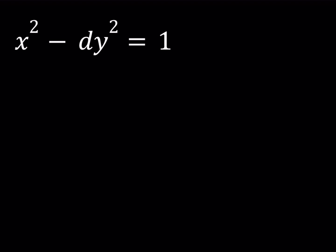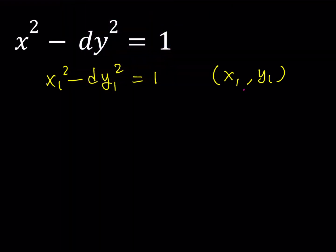I'd like to define the fundamental solution to this equation. Obviously, this equation has a solution. Let's say the solution is x₁, y₁ such that x₁ is the smallest — so if x₁ is the smallest integer such that x₁ squared minus d times y₁ squared equals 1, then x₁, y₁ is called the fundamental solution of this equation. This is called the fundamental solution because x₁ is the smallest possible positive integer. Now, if you can find x₁, y₁, the fundamental solution, then you can find all the other solutions.